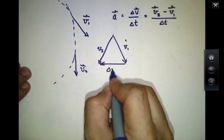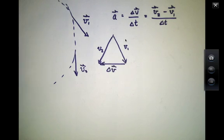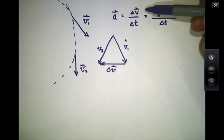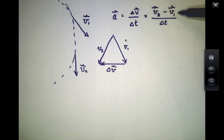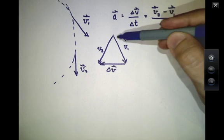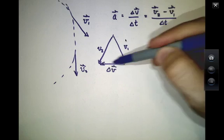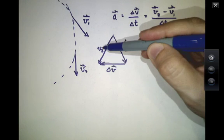Delta V is this vector. Because if delta V is V2 minus V1, then V1 plus delta V has to equal V2. So this says V1 plus delta V is equal to V2.